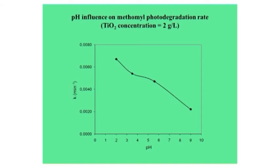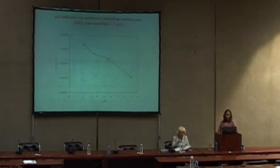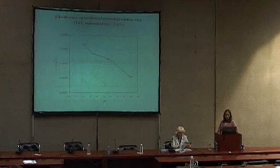This slide presents the influence of pH on the methomyl photodegradation rate, also in the presence of the optimal concentration of titanium dioxide. It is known that pH influences the photodegradation of most organic compounds. In our investigation, we used four pH values — 2, 3.5, 5.6, and 9 — and we found that the highest methomyl degradation rate was observed in acidic solution and the lowest in alkaline solution.